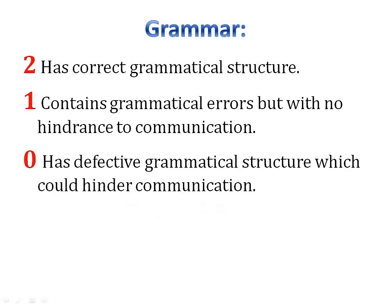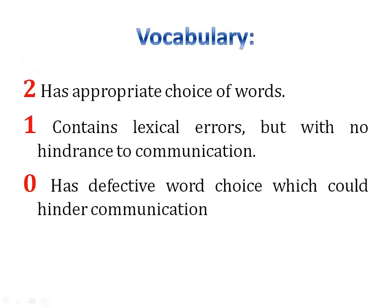Next is grammar. Two marks are given for correct grammatical structure, one mark if there are some errors, and zero for defective grammatical structure. Make sure you revise your grammar for the writing section and study connectors, complex sentences, and compound sentences. For vocabulary, two marks are given for appropriate word choice. Don't try to use overly sophisticated words — just make sure you write synonyms of one or two words, like changing 'increased' to 'augmented' or 'motivate' to 'stimulate.' One mark for errors, zero for defective word choice.